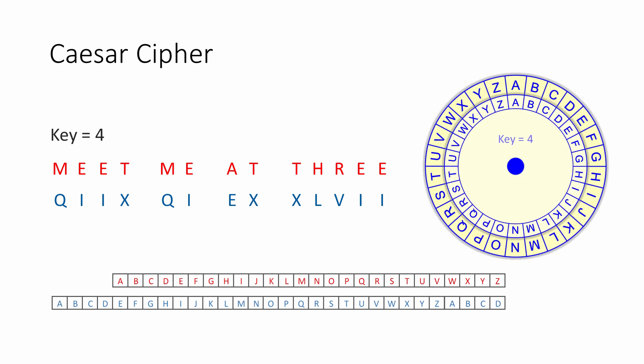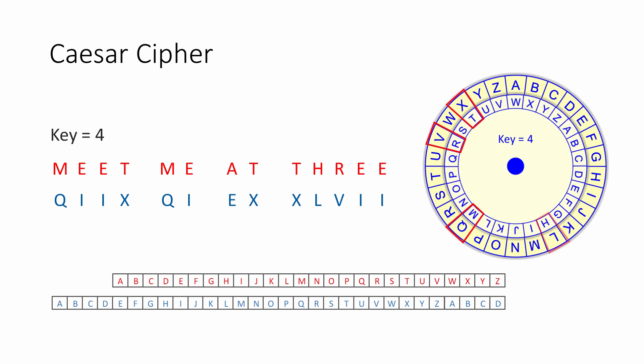A cipher wheel is another way of looking at this. By rotating the inner wheel clockwise four places, the substitutions you need to encrypt a message with a key of 4 are easily read off the other wheel. Perhaps a Roman general in the days of Julius Caesar would carry a gadget like this into battle. The number 4 is called a Symmetric Key because this is what you need to know to decrypt the ciphertext — if you know the key, it's just a matter of reversing the process.